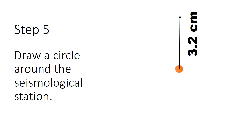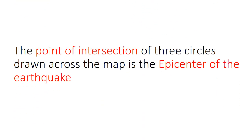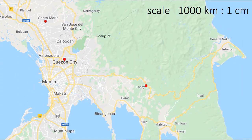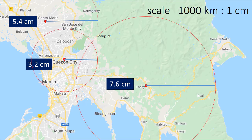Step 5: Draw a circle around each seismological station. The scaled distance we drew from each station will serve as the radius for each circle. If we draw those three circles, the point of intersection of the three circles on the map is the epicenter of the earthquake.